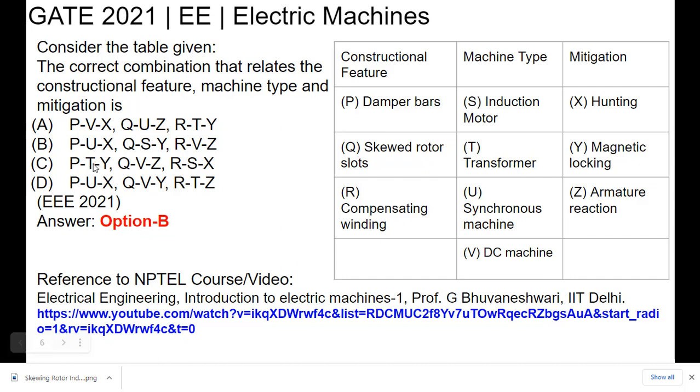The correct answer is option B. That is damper bars are placed in synchronous machine and prevent hunting, and skewed rotor slots are placed in induction motor and prevent magnetic locking. From the above explanation, compensation windings are present in DC machine and help to reduce the armature reaction. So option B is the correct answer.